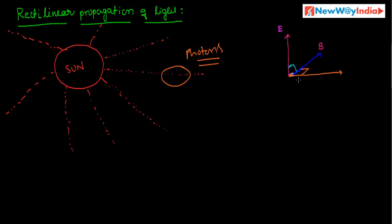So, the magnetic field, electric field, and the direction of propagation of the photon are all mutually perpendicular to each other. What is the direction of a photon? It is a straight line. The direction of the photon is a straight line because of these two fields. This kind of propagation is called rectilinear propagation of light.